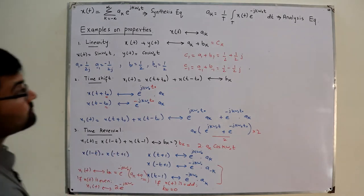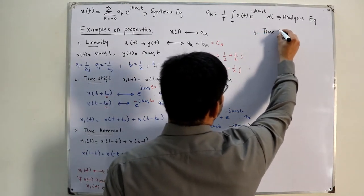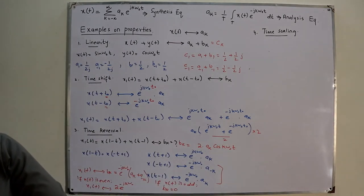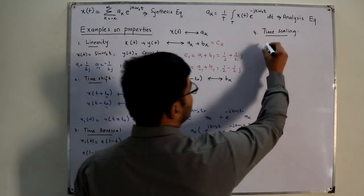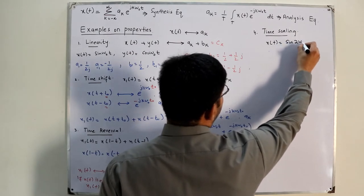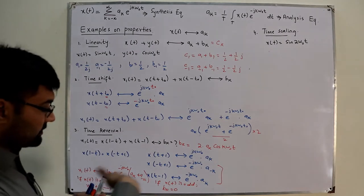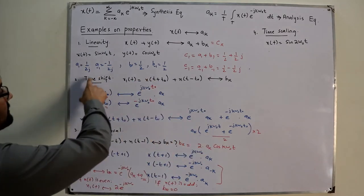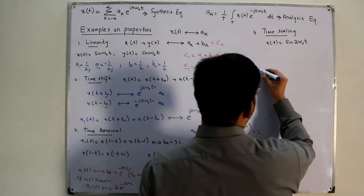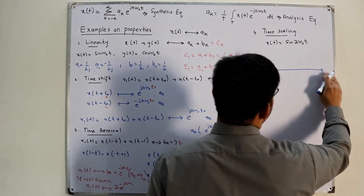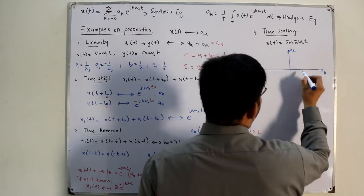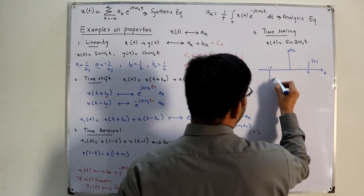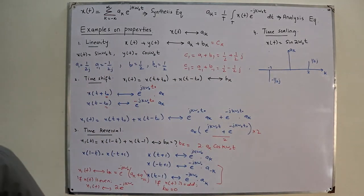The fourth property is time scaling. Take the example x(t) = sine(2ω₀t). From Euler's theorem, the Fourier coefficients of sine(ω₀t) are at k = 1 and k = -1, with values 1/(2j) and -1/(2j). For sine(2ω₀t), where 2ω₀ is the fundamental frequency, the coefficients are at k = +2 (value 1/(2j)) and k = -2 (value -1/(2j)).